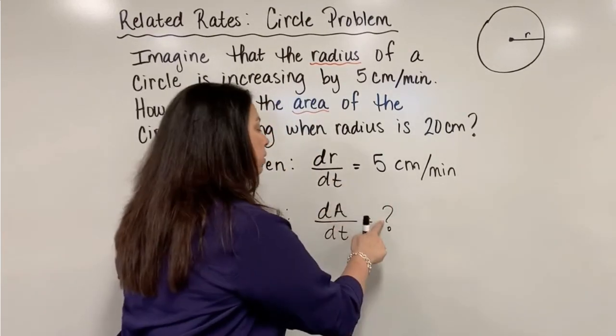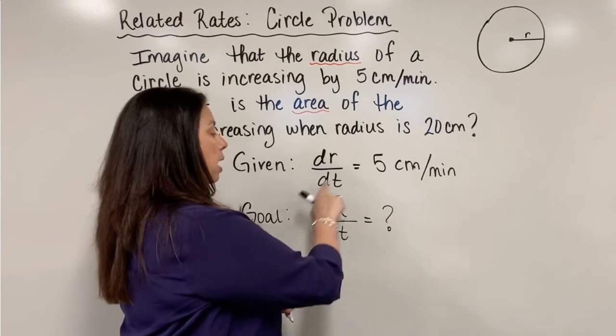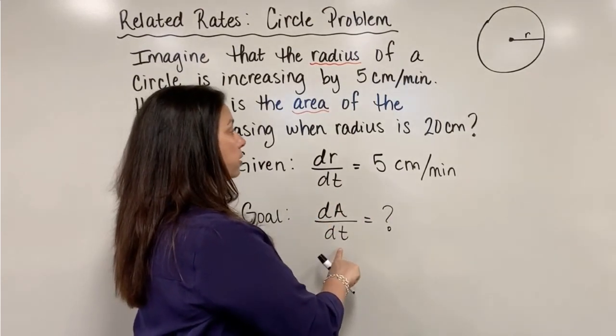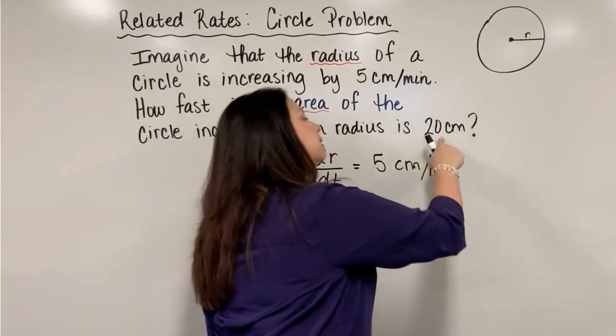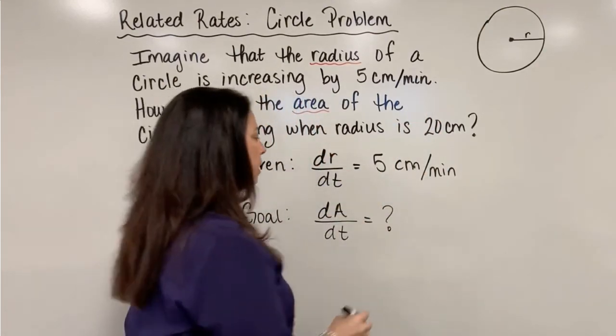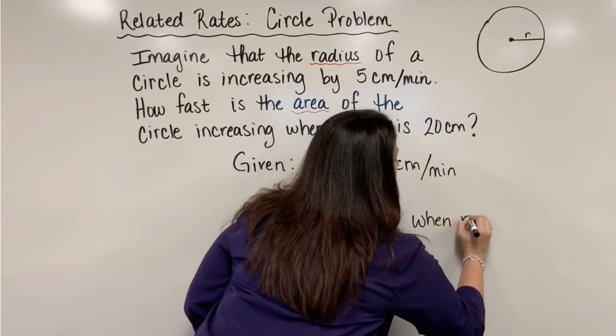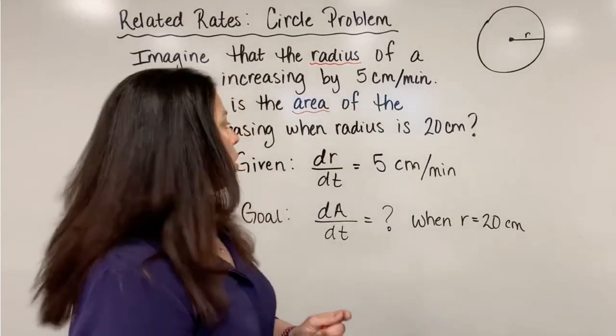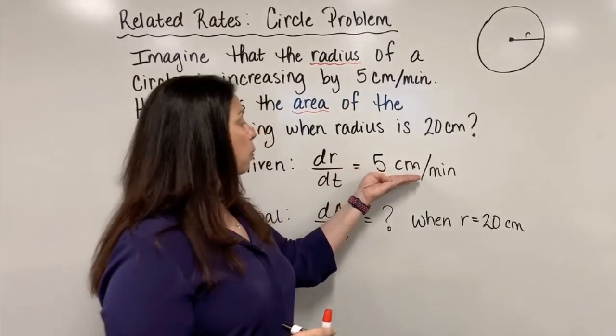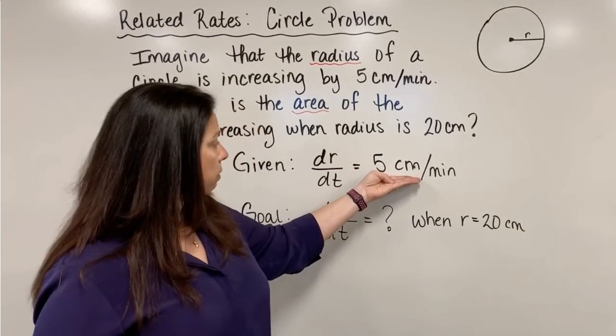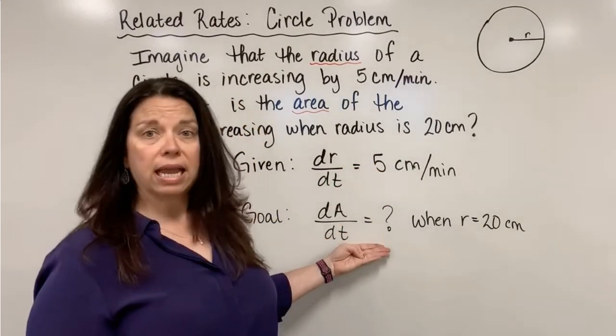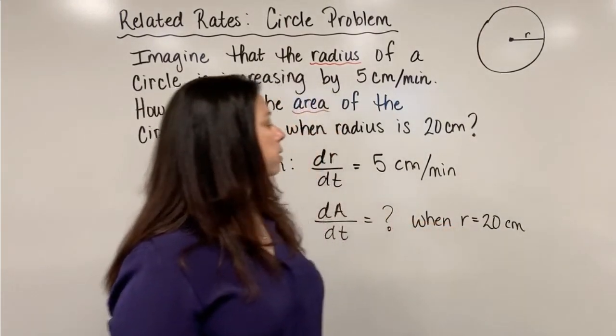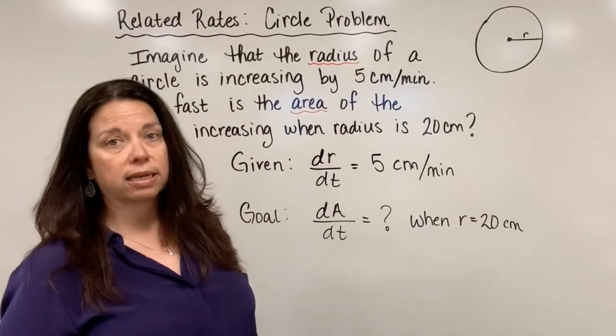We want to know what the rate of increase in area with respect to time is going to be precisely when the radius hits 20 centimeters. So we're going to say when r equals 20 centimeters. This is our task. We know that the radius is changing at this rate. We want to know how fast the area is changing, but precisely when the radius is in fact 20 centimeters.